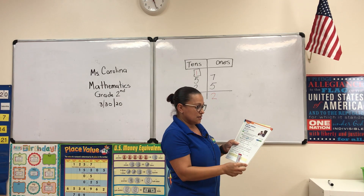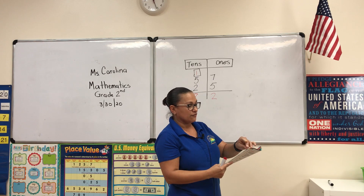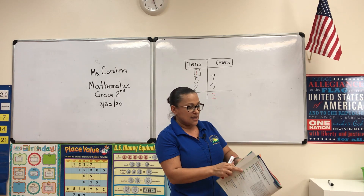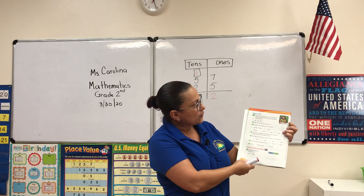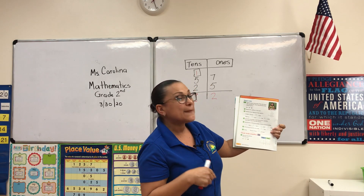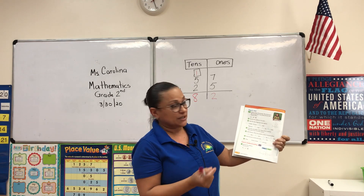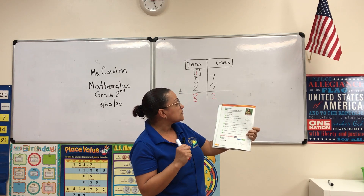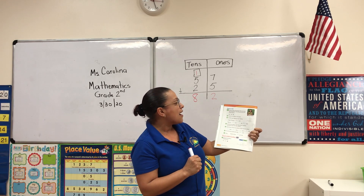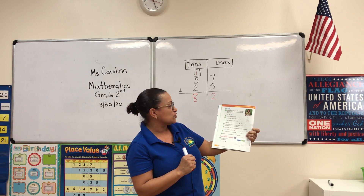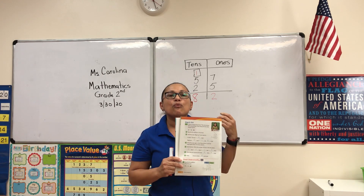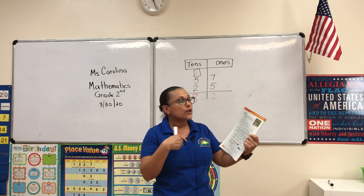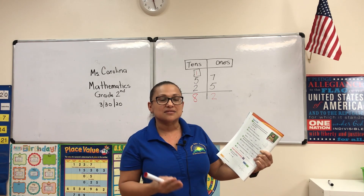Now we're going to go to page 304 and do another problem. Giovanna draws 36 pictures, then she draws 58 more pictures. How many pictures does Giovanna draw? Again, they're showing you the numbers you'll be adding, and we'll do it exactly the same way as before.